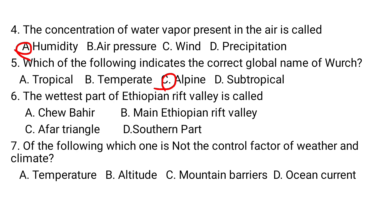Question number six: the wettest part of the Ethiopian Rift Valley is called — A) Awash, B) Main Ethiopian Rift Valley, C) Afar Triangle, D) southern part. The Main Ethiopian Rift Valley is the wettest part of the Ethiopian Rift Valley, known for having high population density as well as high density of vegetation.